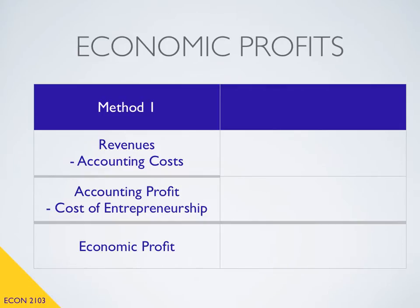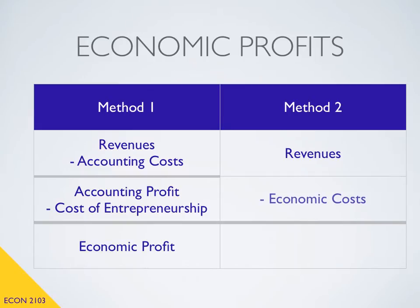I also want to point out that in the coming weeks, there's going to be a second approach to computing economic profits that we'll find more useful. Like method one, it starts with our revenues. But then we subtract off our economic costs. These economic costs are the value of all of our resources — the value of our land, our labor, our capital, and our entrepreneurship — all lumped into this term we call economic costs. When we subtract off those economic costs, we get economic profit. For most of the course, method two will be the most useful approach.